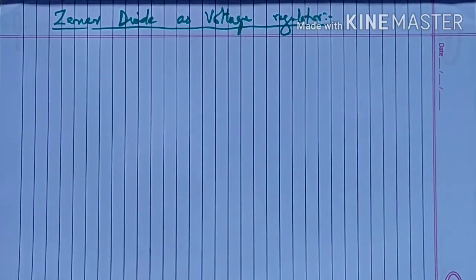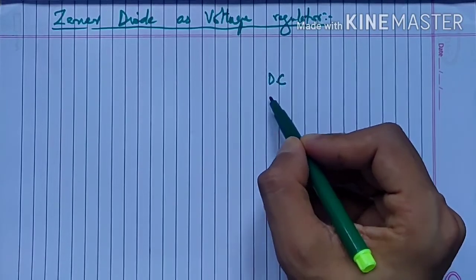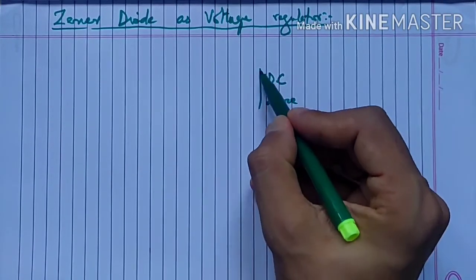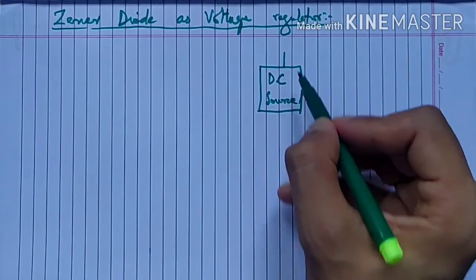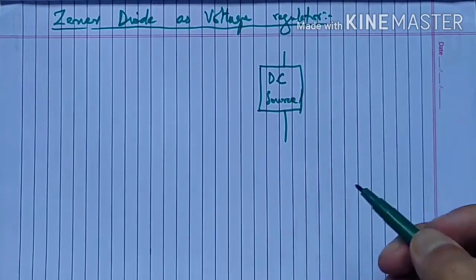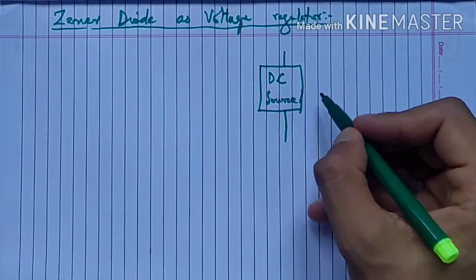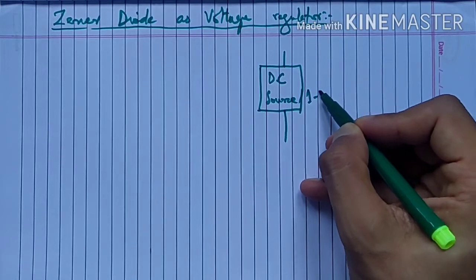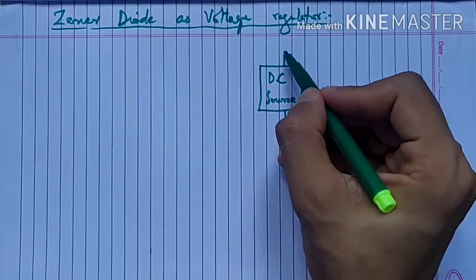Voltage regulator का मतलब क्या है, इसको हम एक example से समझेंगे। जैसे हमारे पास एक DC source है, यह कुछ voltage दे रहा है। Suppose इसके जो two terminals हैं उनके बीच जो potential difference है, वो एक particular value पर नहीं रहता - say that is ranging from 1 to 5 volt. यह 1 volt से लेकर 5 volt तक voltage दे रहा है, तो voltage fluctuate हो रहा है between 1 and 5.